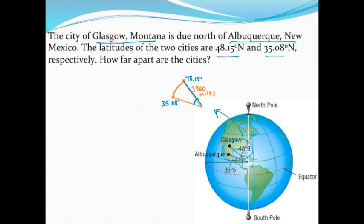Because I've been given their two latitudes, it should simply be a matter of subtracting those two latitudes to find out how far apart those cities are in terms of degrees. When I subtract those, I get a central angle of 13.07 degrees.